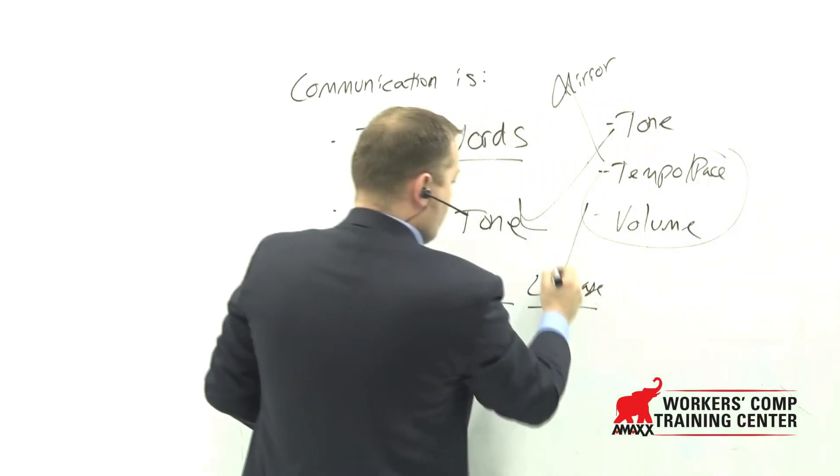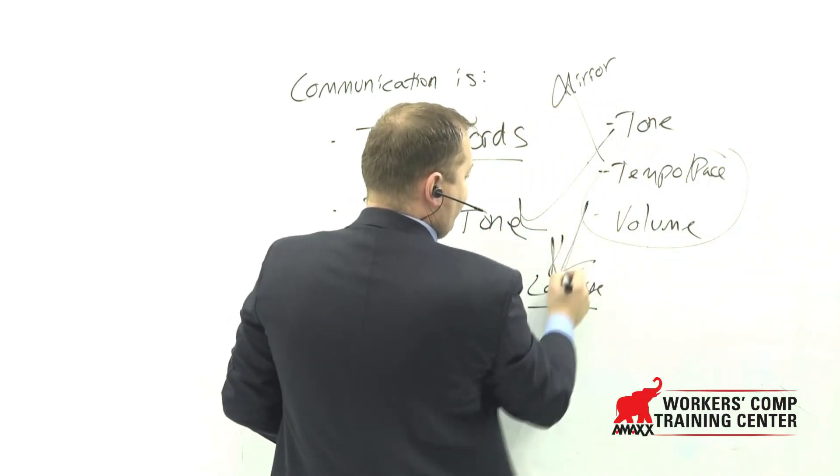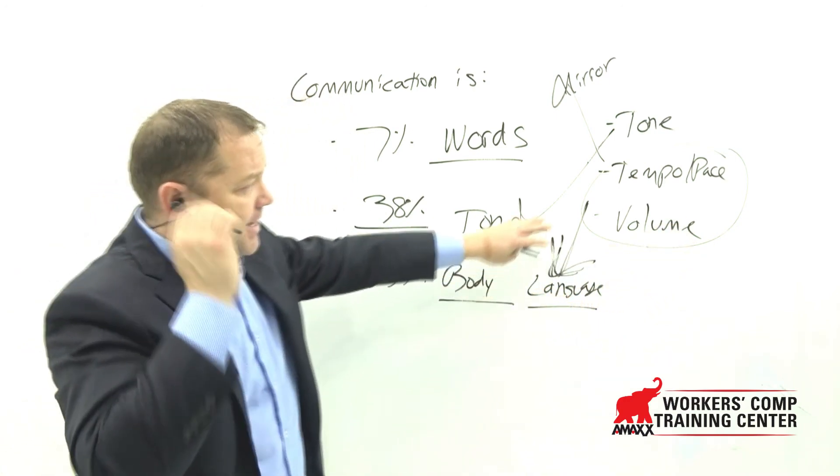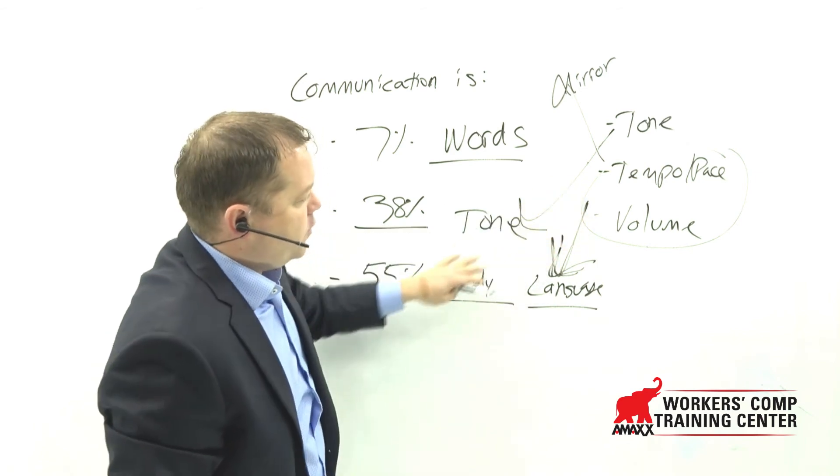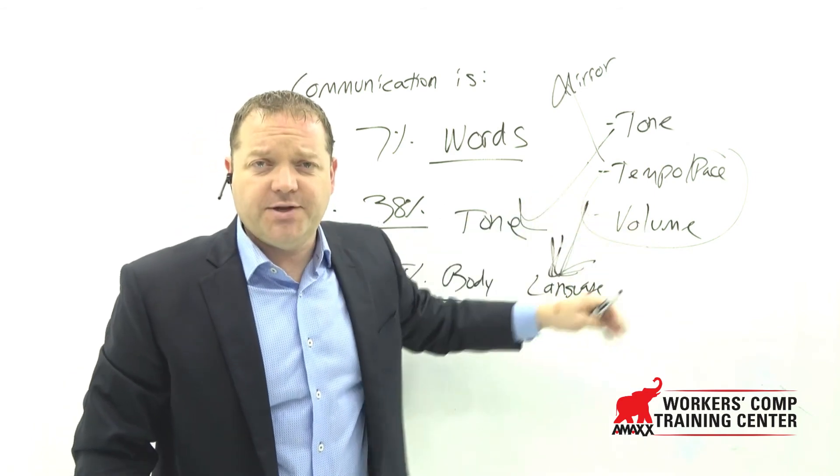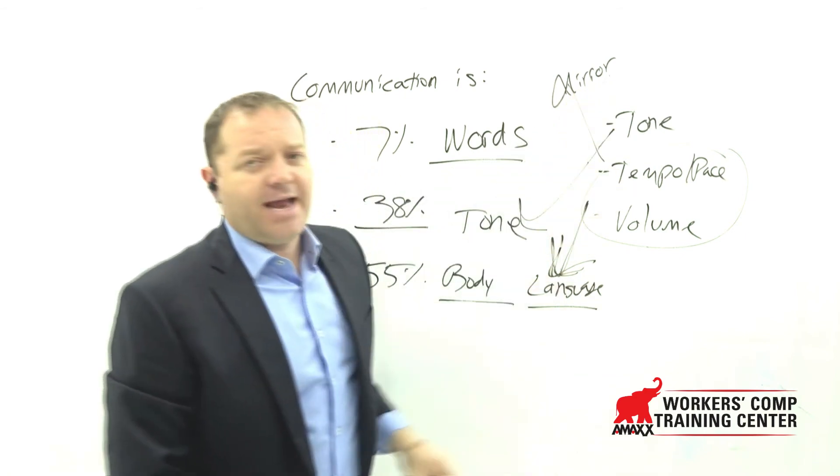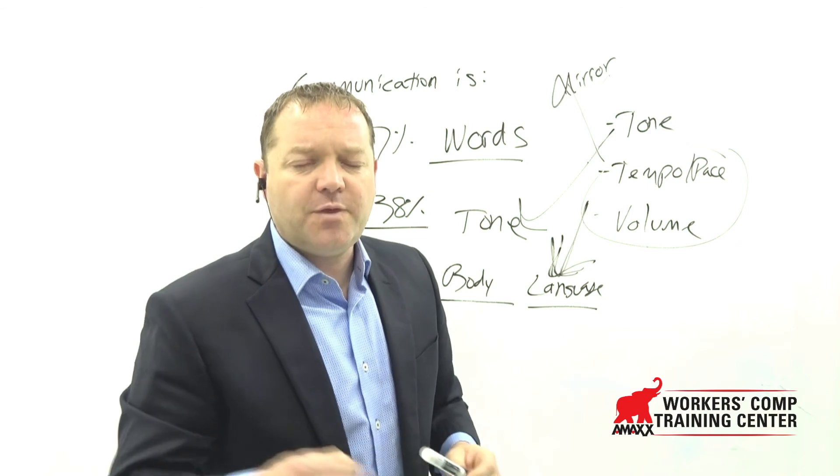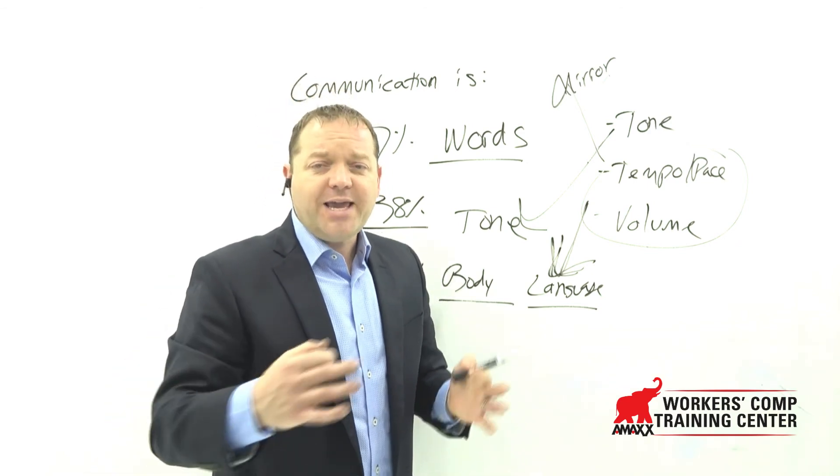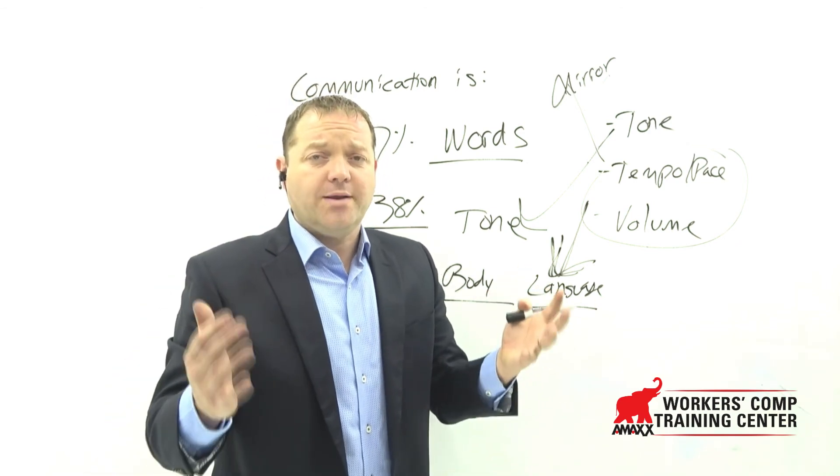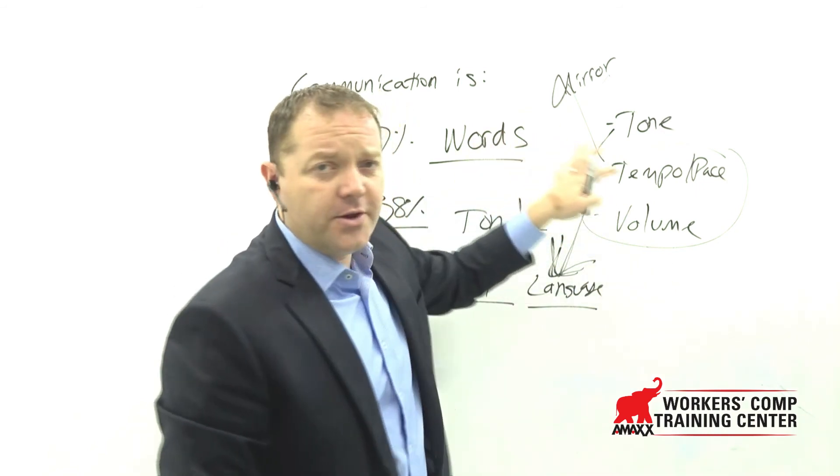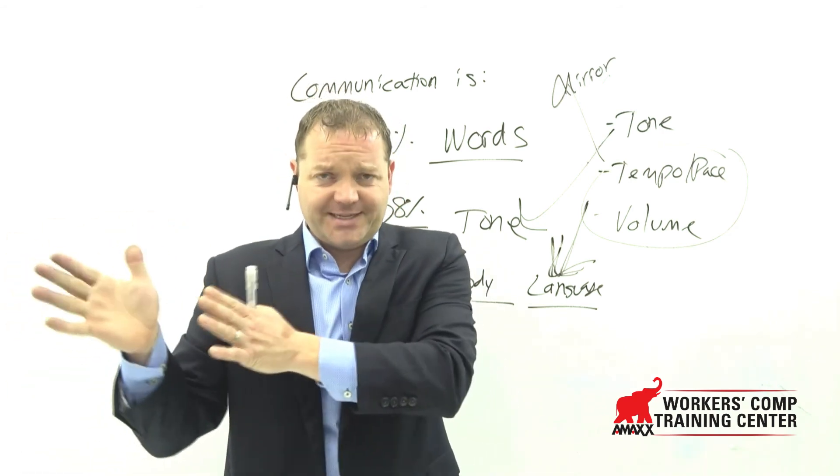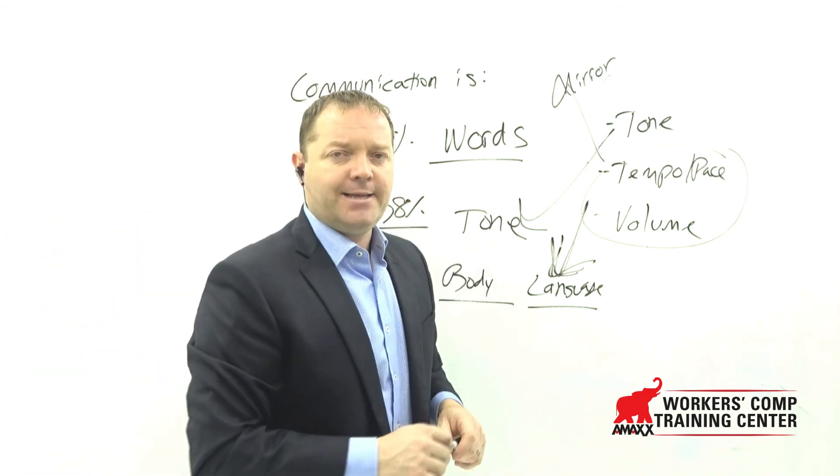Over the phone, if you can't see the person, it comes down to connecting to this body language, connecting to how it is that you're interacting with that individual. Think about the pace that that injured worker, the person you're speaking with on the other line, is using. We like dealing with people who are like us. We like people in general who are like us. The more that you can connect, the more that you can quickly build that rapport out of the gates, the more you're going to set yourself up for success in managing that claim.